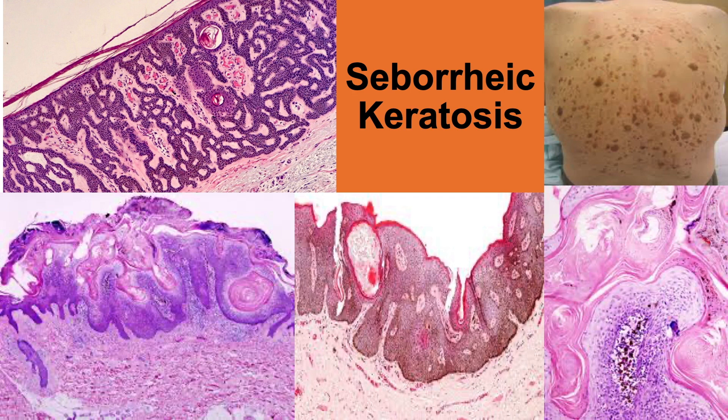Microscopically, the number of epidermal basal cells is greatly increased, presumably as a result of a maturation defect. The acanthotic pattern is the most common and frequent pattern, in which a thick layer of basal cells is seen interspersed with pseudohorn cysts.